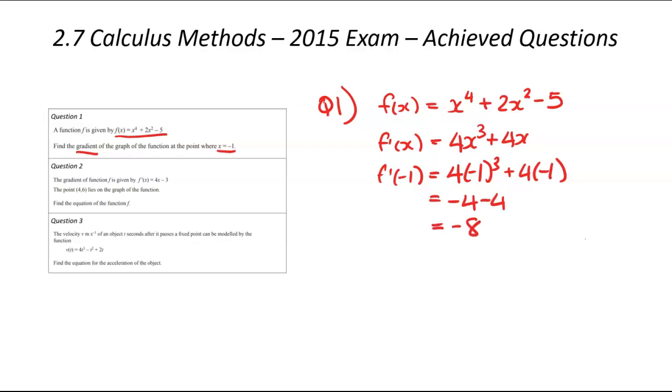Putting those together gets us to minus 8. So that means at that particular point, we've got quite a steep downhill point. It should be going downhill for every 8 units it goes across 1 unit.